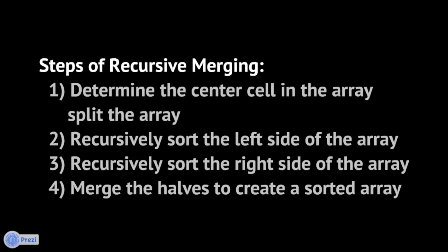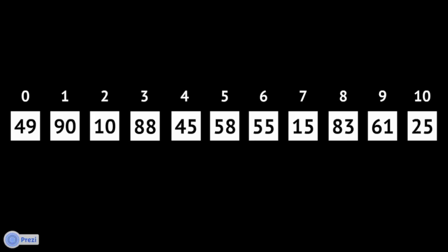So first of all, we have this array and it has 11 different items: 49, 90, 10, 88, 45, 58, 55, 15, 83, 61, and 25. They are clearly not in order, not sorted in any way. So the first thing we do is step one: we determine the center of the array, which in this case would be cell 5, which is 58. And then we determine the left side and the right side.